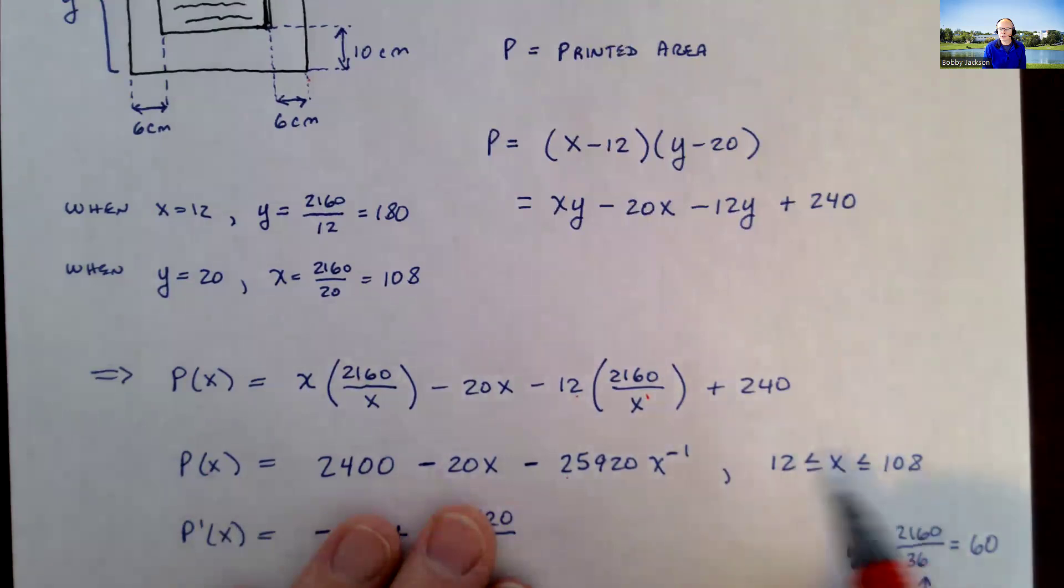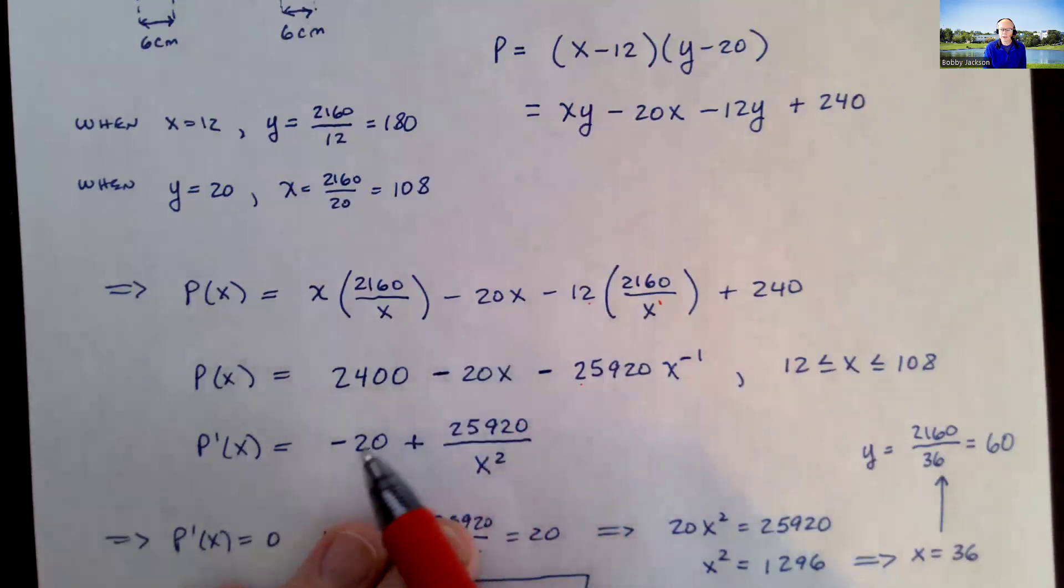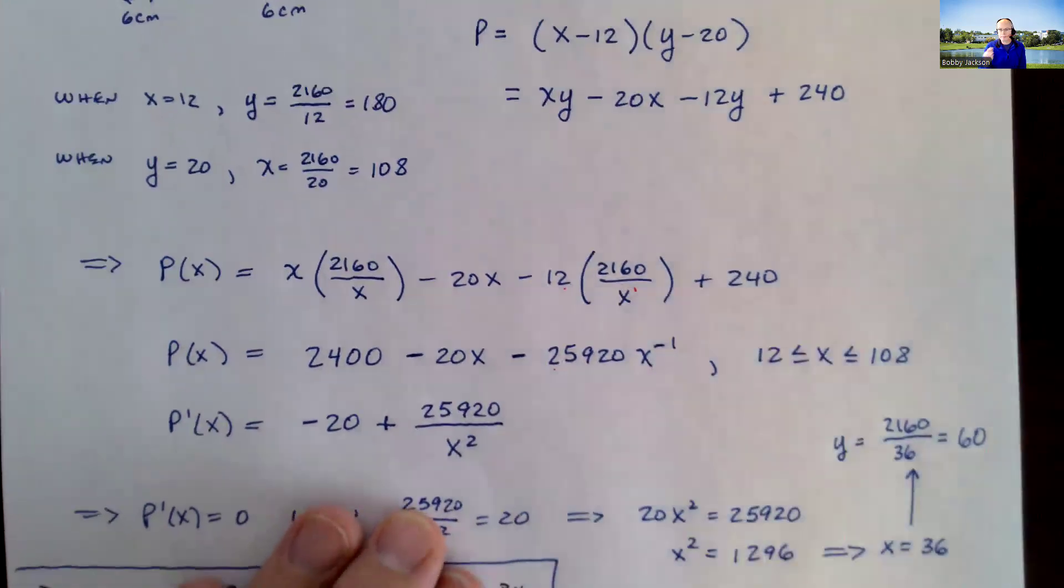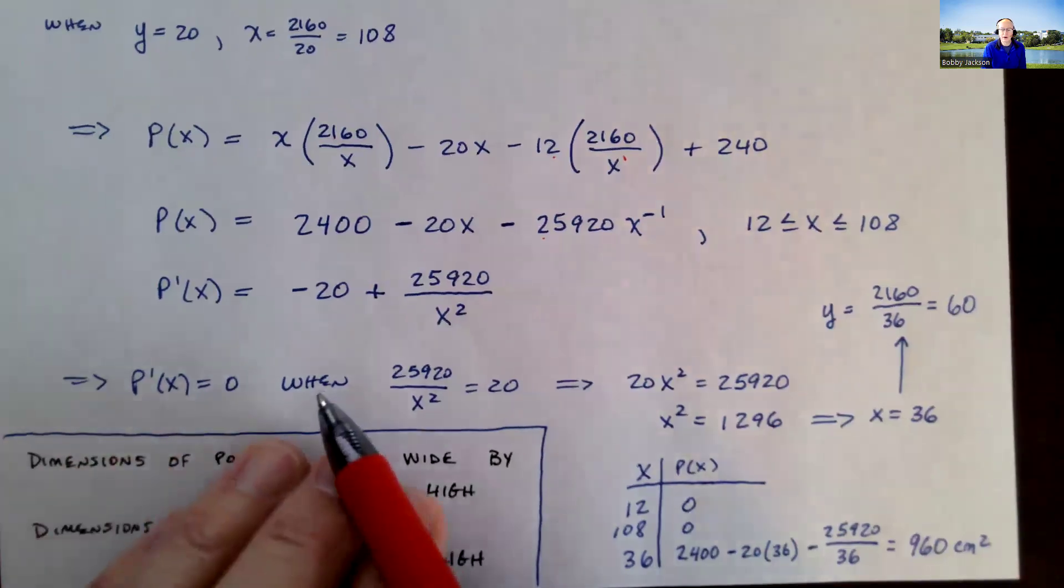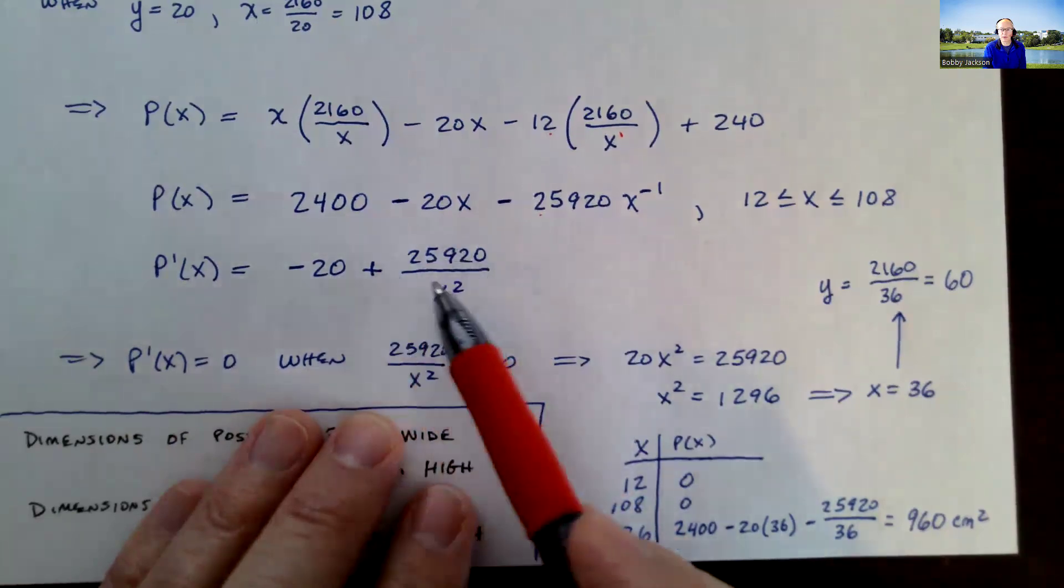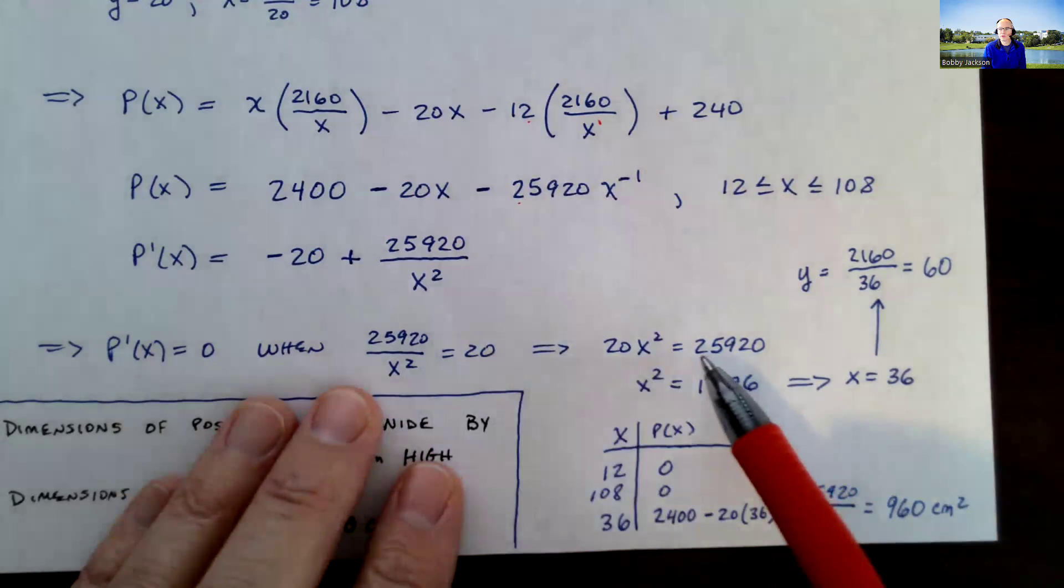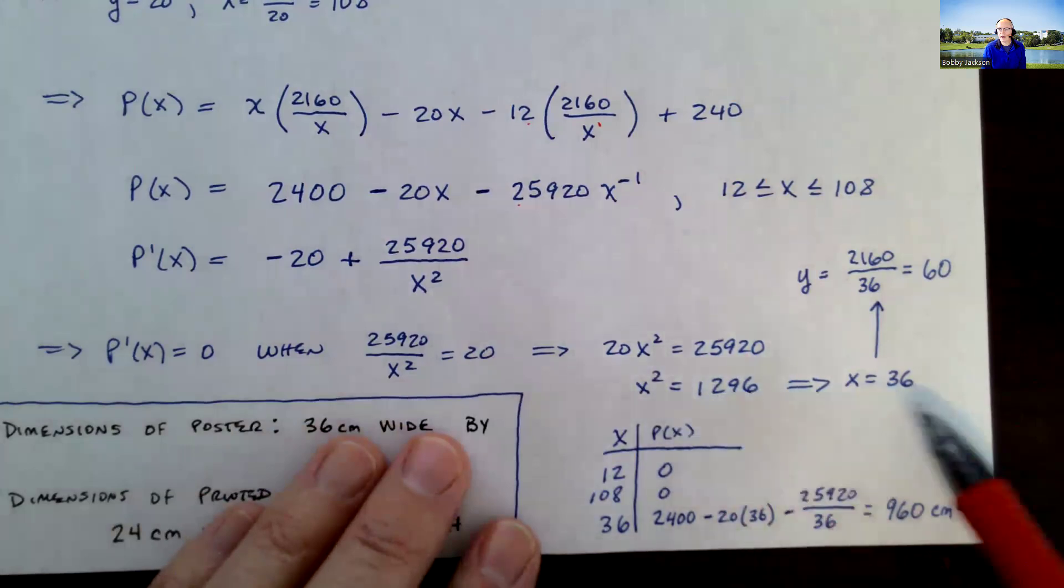We first find the derivative. Of course, the derivative of constant is zero. Derivative of negative 20x is negative 20. And this is bring negative 1 down, positive 25,920x to the negative 2, which I can write this way. So when is our derivative zero? Where's our critical values at? Well, the derivative will be zero when this fraction here is positive 20, right? Because negative 20 plus 20 would be zero. So when is this equal to 20? We'll multiply by x squared. I get 20x squared is 25,920. Divide both sides by 20. I get x squared is 1296. And the square root of that is 36.